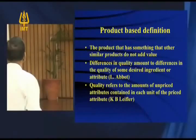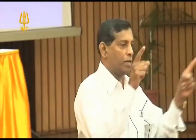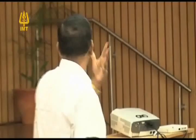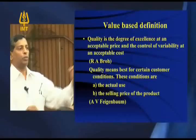Quality refers to the amount of un-priced attributes contained within the product. The value-based definition says that quality is the degree of excellence at an acceptable price and the control of variability at an acceptable cost. All quality problems arise because of variability — we will see that a little later. So if you can control the variability and provide a product acceptable to the customer at a price, then you have quality. Quality means the best for certain customer conditions — specifically, the actual value the customer derives relative to the selling price of the product.